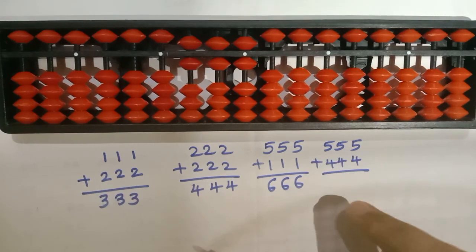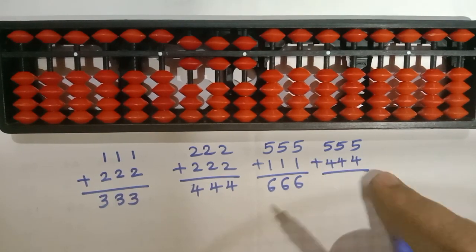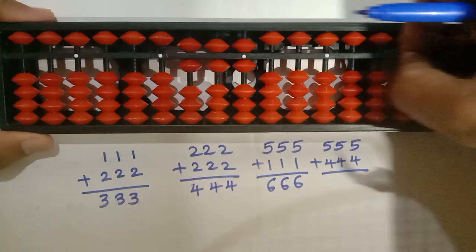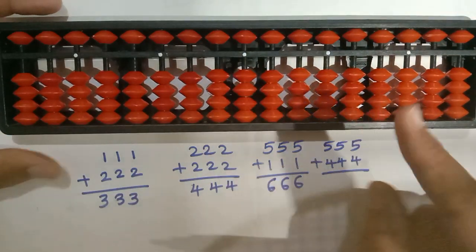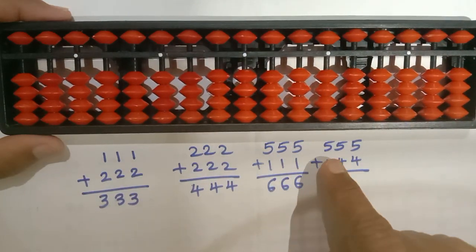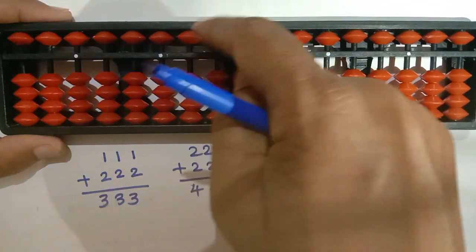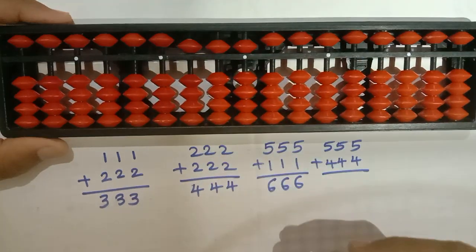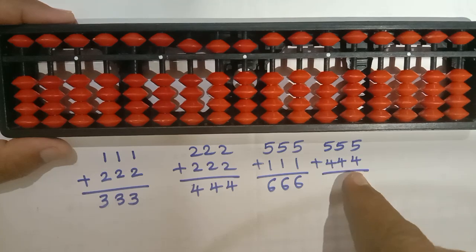So here 555 plus 444. We have to make it clear before going to do any sums. So here 555 is there. So write here 555 and 444 here.